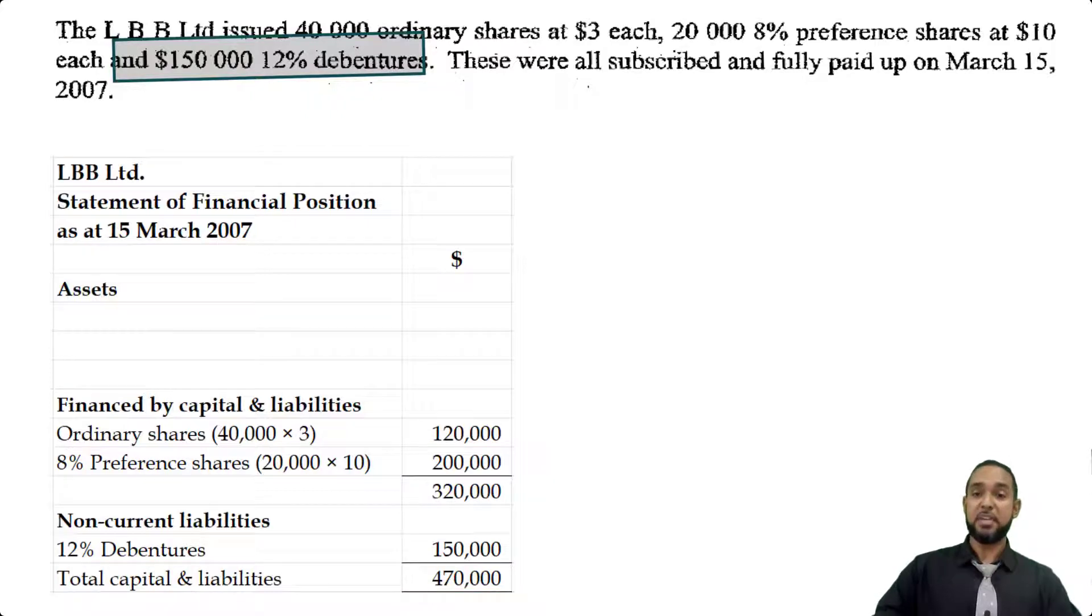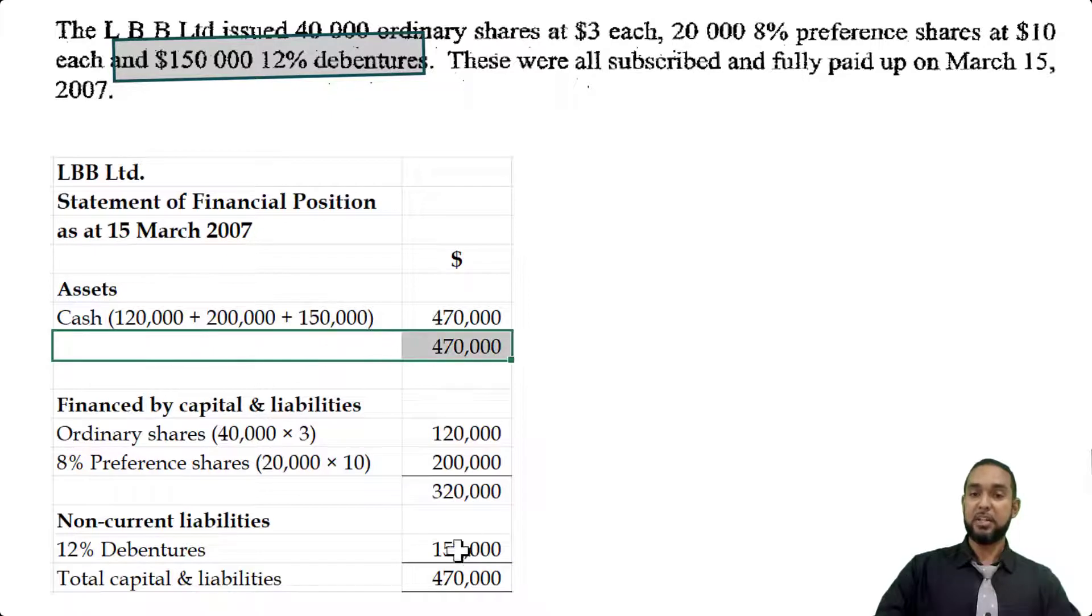When we add the 320 share capital and the non-current liabilities, we get total capital and liabilities of 470. And that's going to be the amount of the cash—the working: 120 for the ordinary shares, 200,000 for the preference shares, and 150,000 for the debentures. As you can see, the total asset value equals total capital plus liabilities, which is the basic accounting equation. That's it for part A.